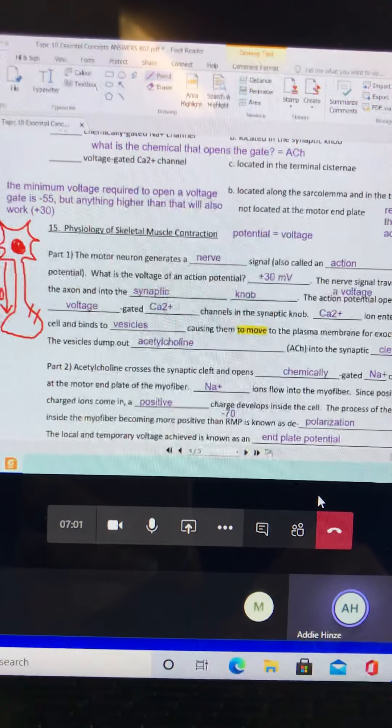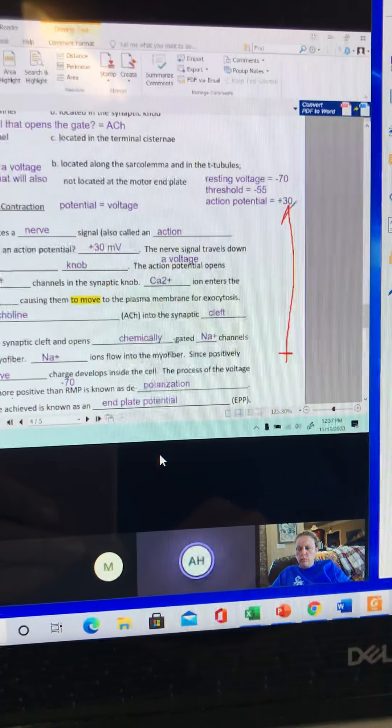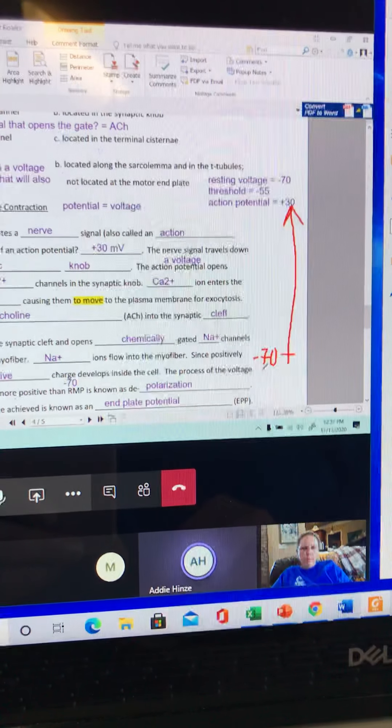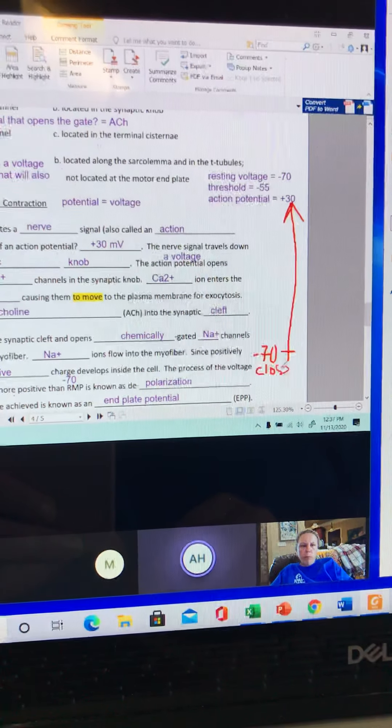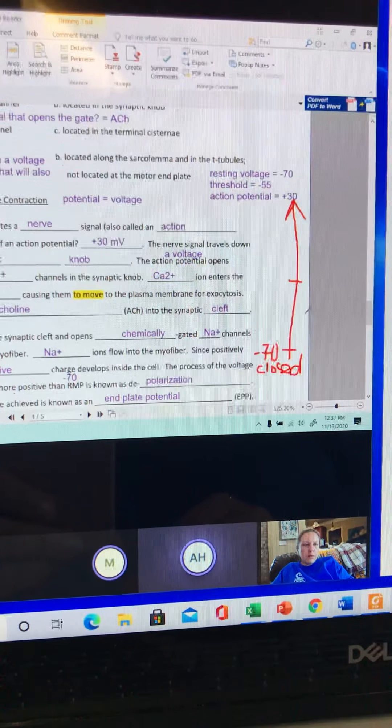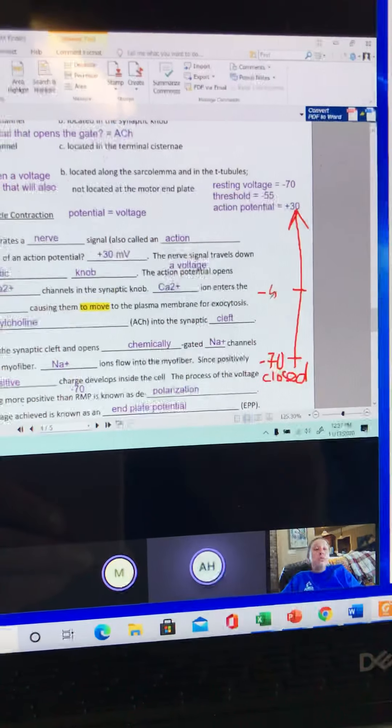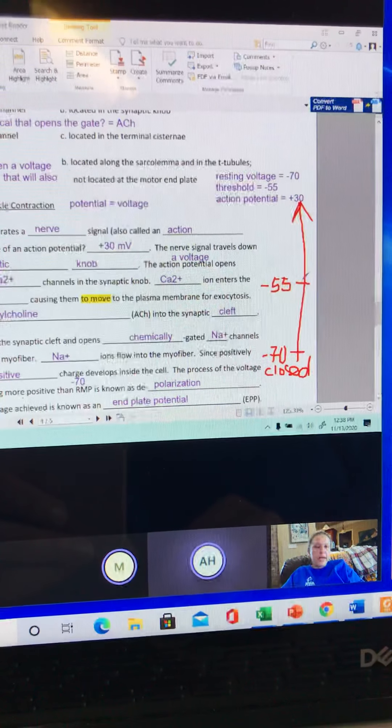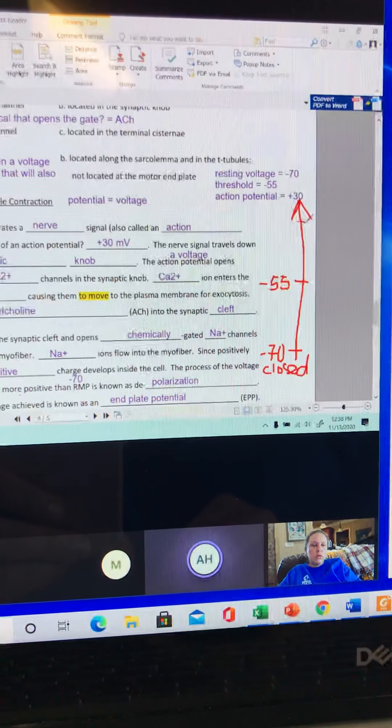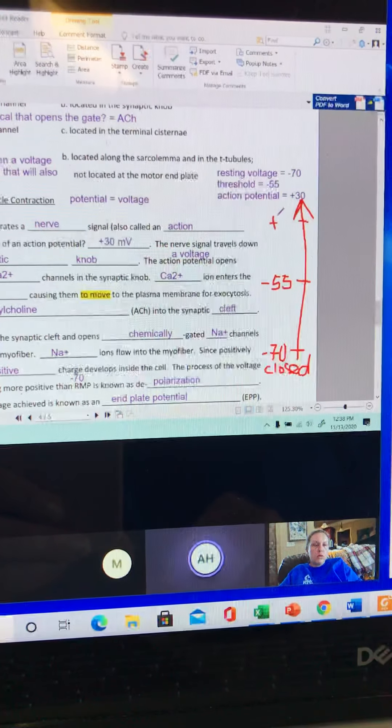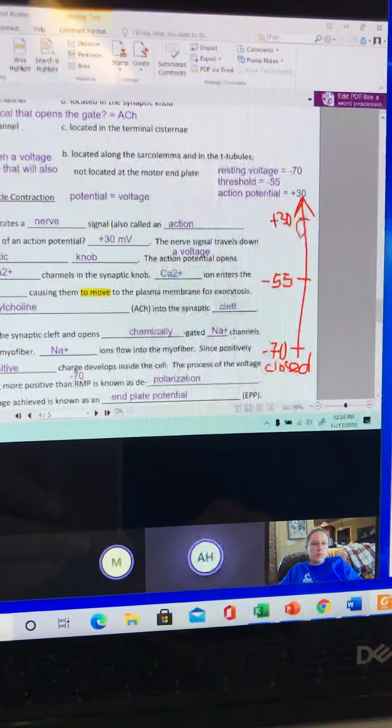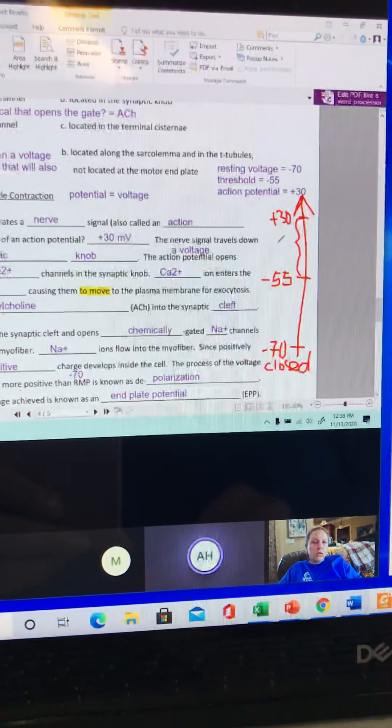If we do a little number line over here just as a reminder: at negative 70, all the voltage gates are going to be closed. And the voltage required to open them, the minimum is minus 55. That's the minimum required to open a voltage gate, and then the full action potential value is plus 30 millivolts. But anywhere in between minus 55 and plus 30, the voltage gates are going to be open.